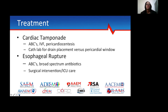If this were an aortic dissection, emergent treatments include pain control and blood pressure control with labetalol and esmolol drip, with definitive management being surgery for a Type A versus medical management for a Type B aortic dissection. For cardiac tamponade: ABCs initially, IV fluids, consider pericardiocentesis in the emergency department, with definitive management at the cath lab for drain placement versus a pericardial window. If esophageal rupture is diagnosed — given significant vomiting — ABCs, broad-spectrum antibiotics, with definitive care including surgical intervention and ICU care.